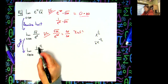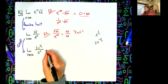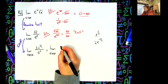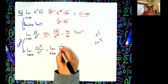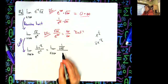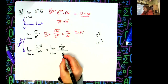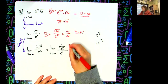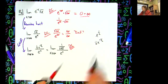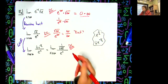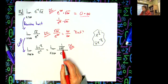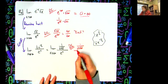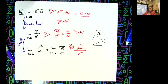Let me go ahead and move the negative exponent to the bottom to clean that up. So the limit as x approaches infinity becomes one over two square root of x, all over e to the x. Now let's do direct substitution: I'm going to have one over two square root of infinity, all over e to the infinity.